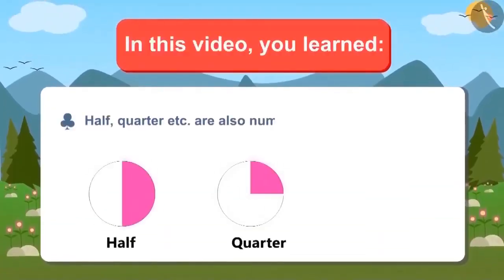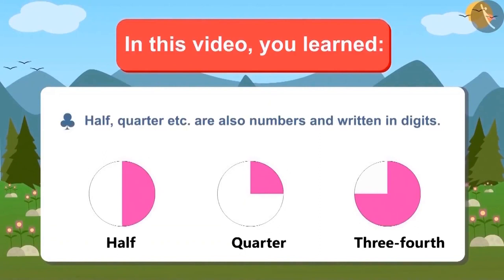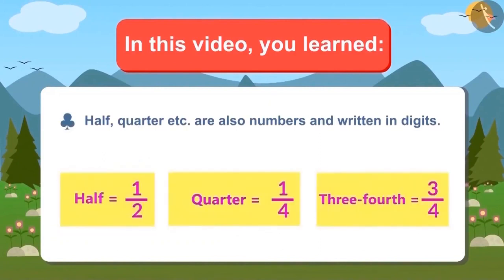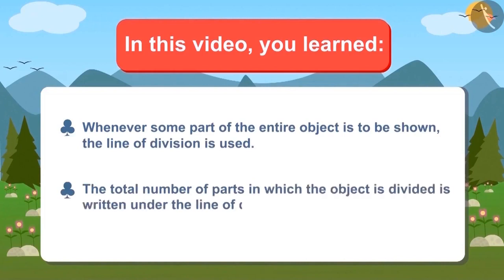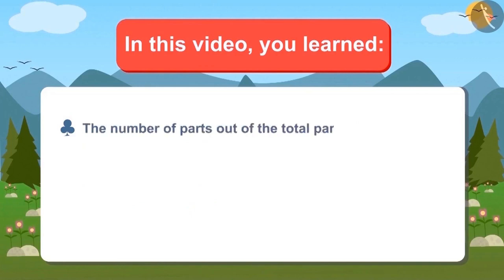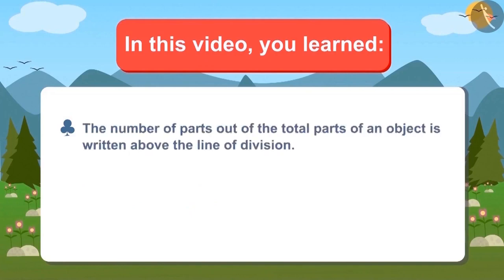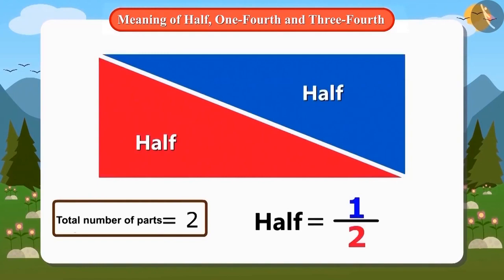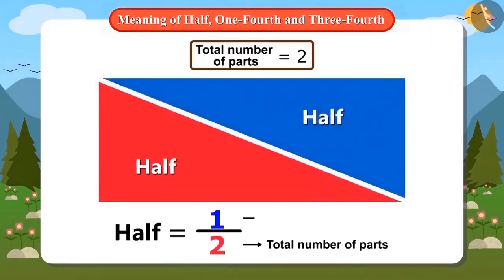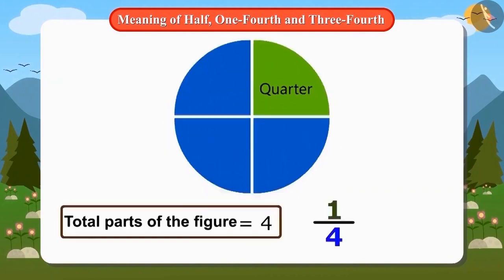In this video, we have learned that half, quarter, etc. are also numbers and they can be written in digits. Whenever some part of an entire object is to be shown, the line of division is used. The total number of parts is written under the line, and the number of parts out of the total is written above the line. For example, to show half of an object, one by two is written — one part out of two. And one by four is written for one-fourth — one part out of four.